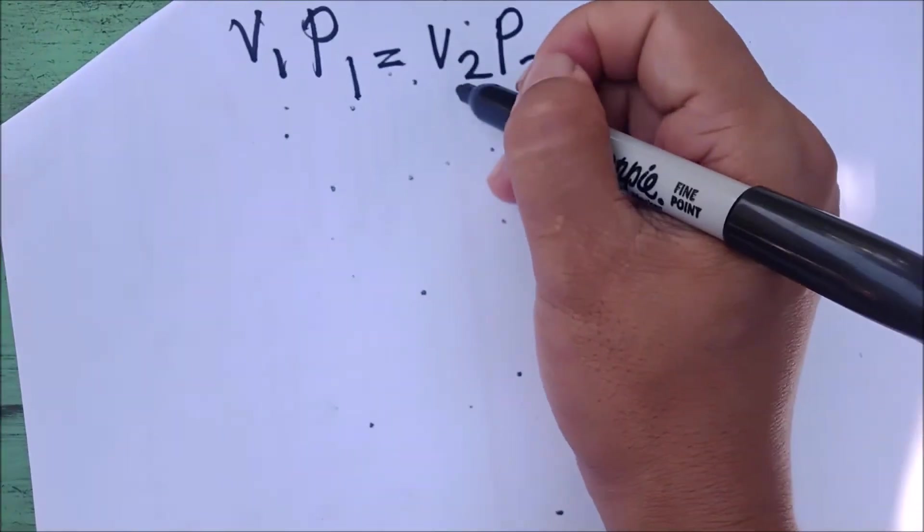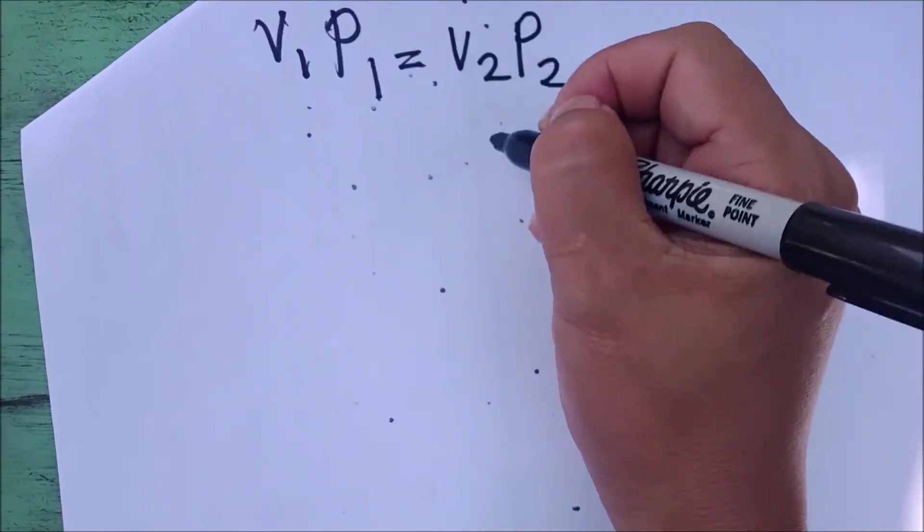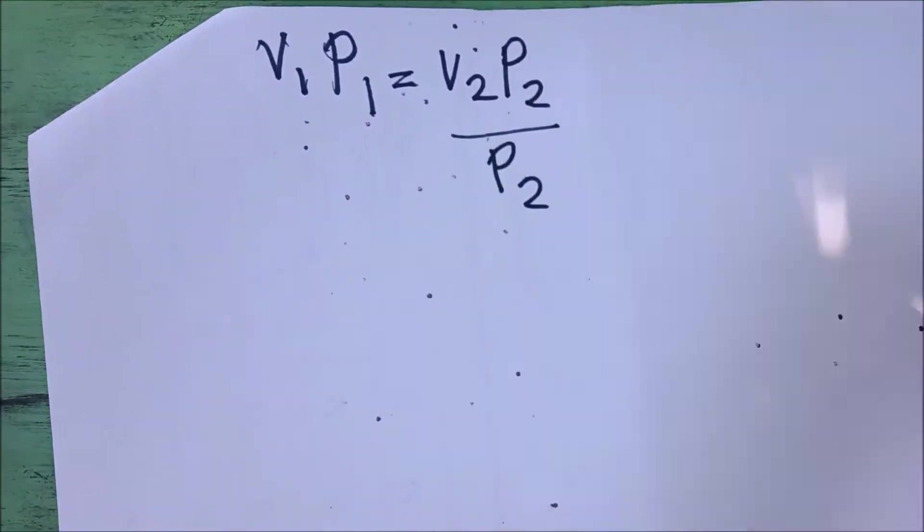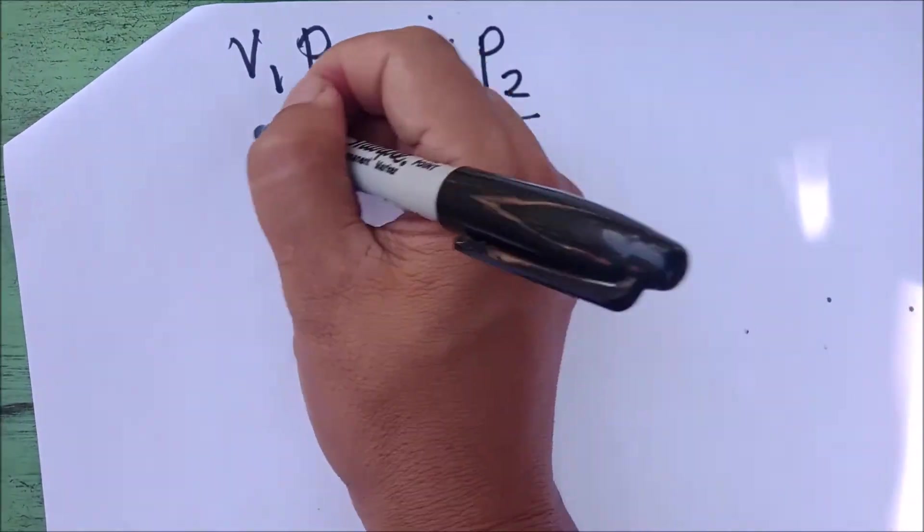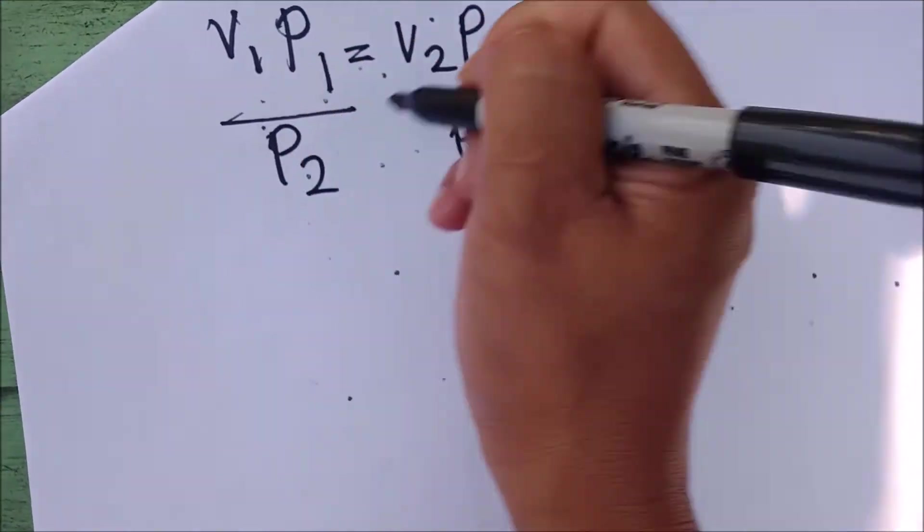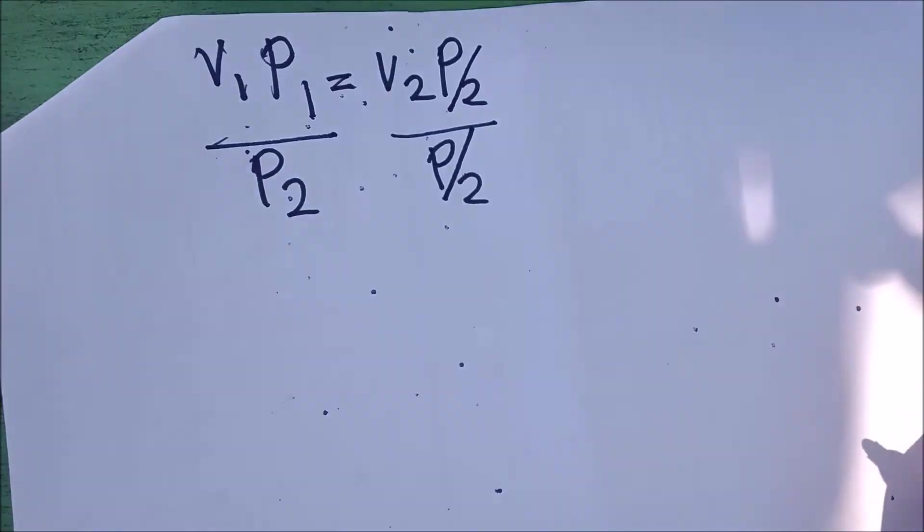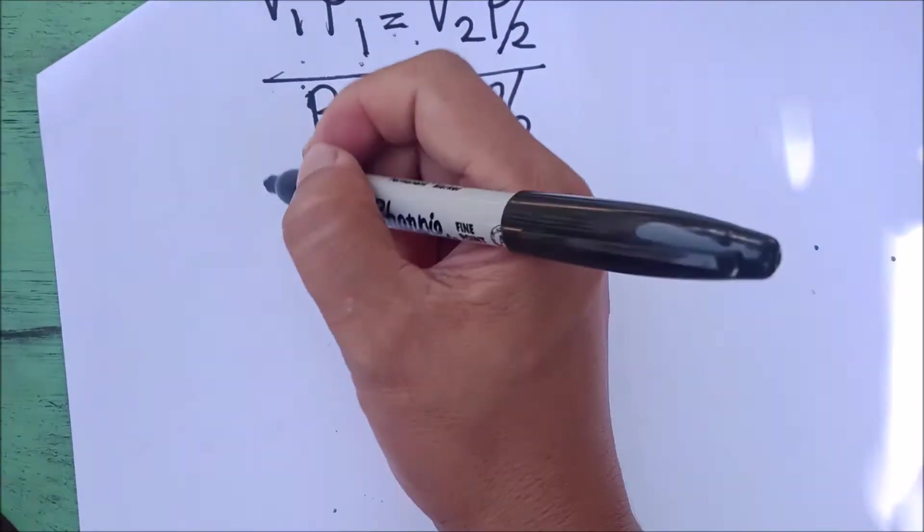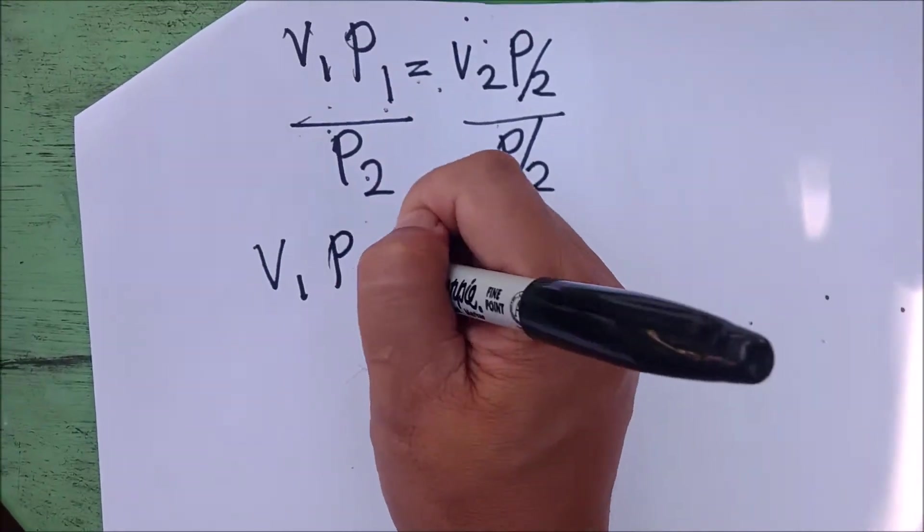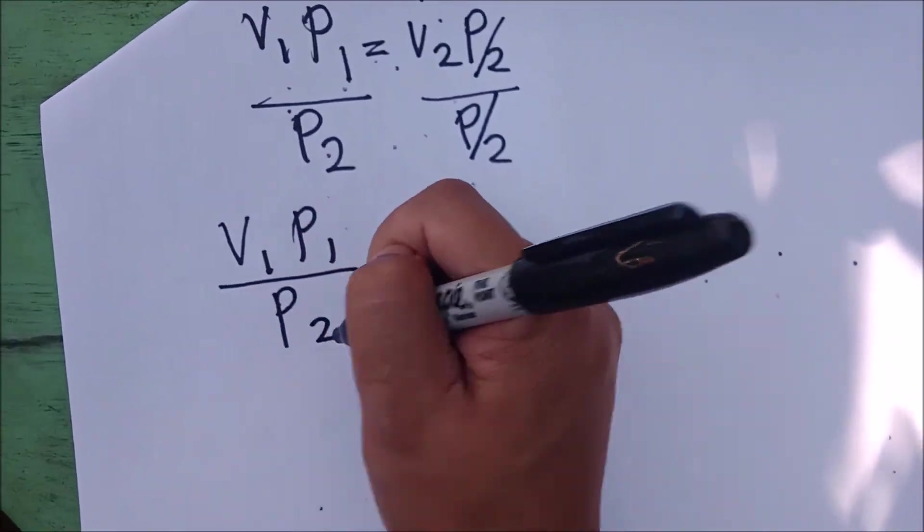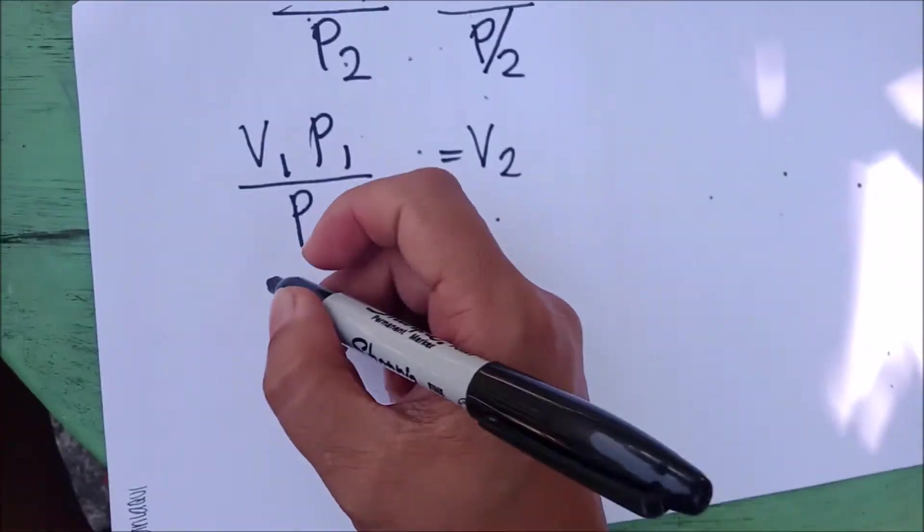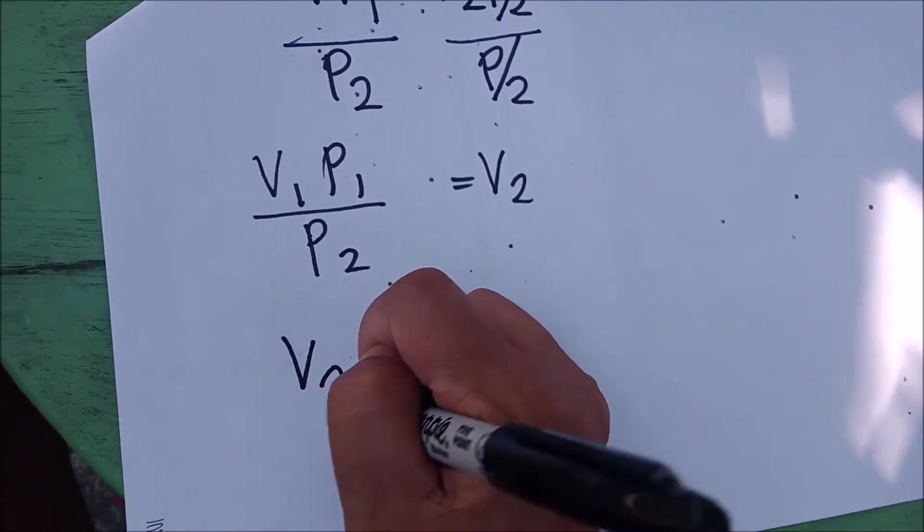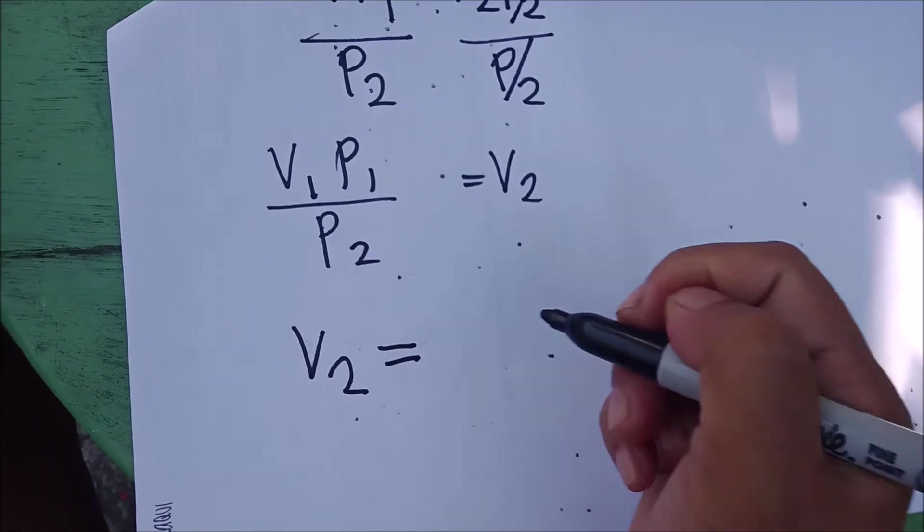We need to eliminate P2 on this side. Divide both sides by P2. This now will be cancelled out. Hence, our formula for V2 will be V1, P1 over P2. Now, it's just the same by rewriting it. If you want to write V2 on the left side, just copy it exactly as it is.